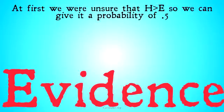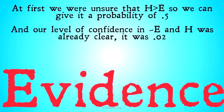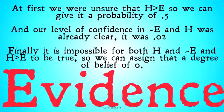At first we were unsure that H implied E, so we can give that a probability of 0.5 — we don't know if it's the case or not. Our level of confidence in not-E-and-H was already established at 0.02. Finally, it's impossible for both H-and-not-E and H-implies-E to be true simultaneously — that's just the definition of implication. And we have to have confidence in the laws of logic, so we can assign that conjunction a degree of belief of 0.